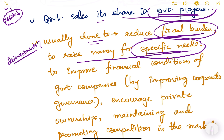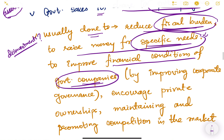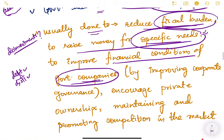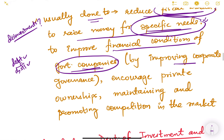Why is disinvestment done? It is usually done to reduce fiscal burden and to reduce the fiscal deficit. It is also done to raise money for specific needs — if there is any specific need in the country, disinvestment is done and money is raised. Another reason is to improve the financial condition of government companies.